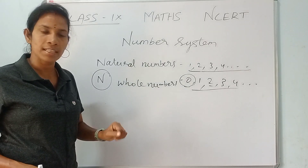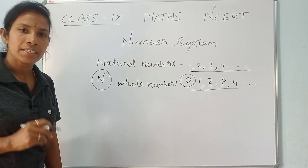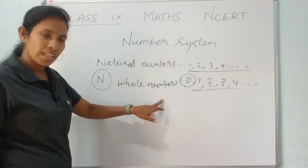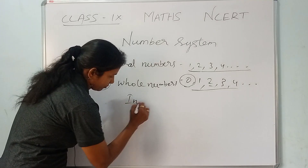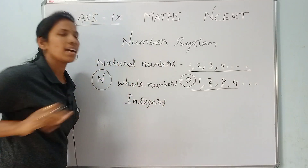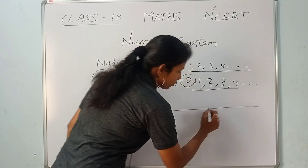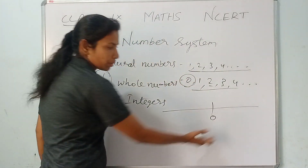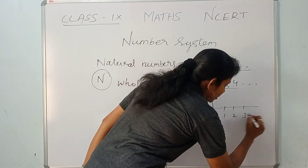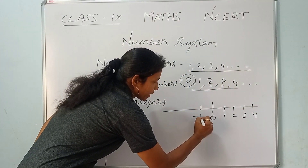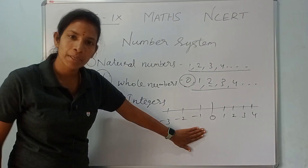Next, after natural numbers and whole numbers, we have Integers. Integers are represented on the number line. The right side of the number line has positive integers: 1, 2, 3, 4. The left side has negative numbers: minus 1, minus 2, minus 3.